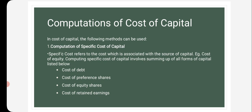Cost of debt is the rate of return expected by the lenders. The cost of preference shares is normally a fixed rate of dividend payable on preference shares, but in practice, preference dividend is regularly paid by companies when they earn a sufficient amount of profit. Cost of equity capital may be defined as the minimum rate of return that the firm must earn on its investment to keep the market price of equity shares unchanged. The cost of retained earnings refers to that portion of profit retained by the company for future development, business use, and expansion.